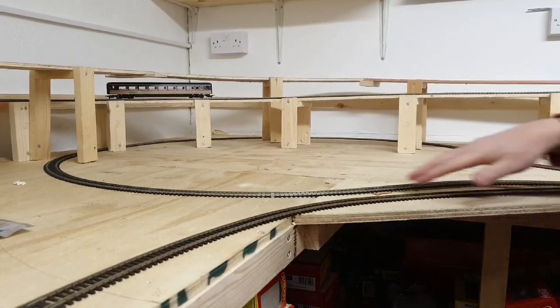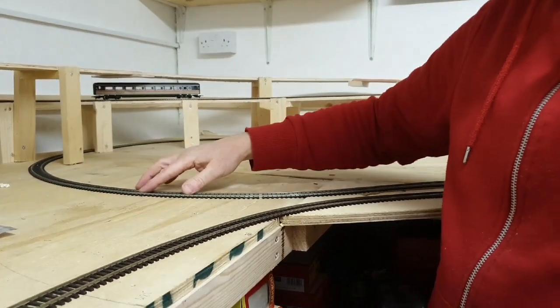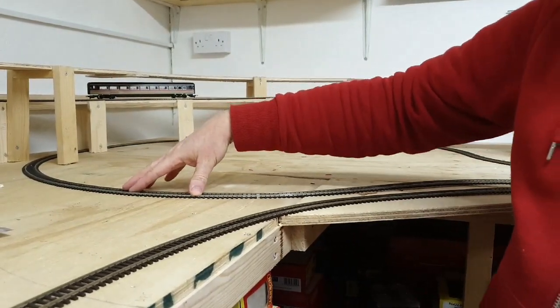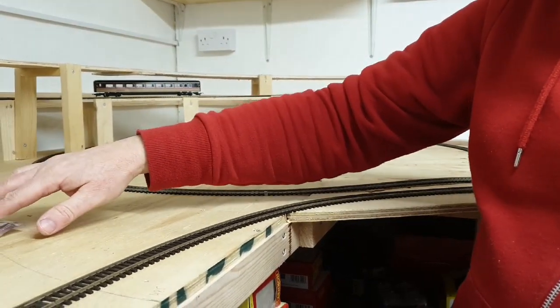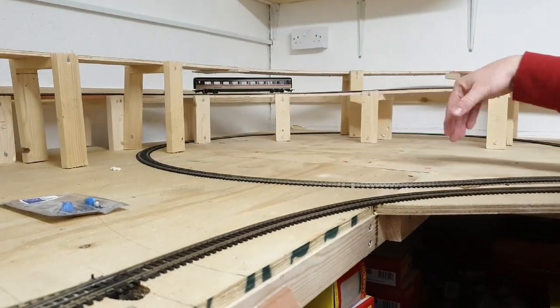So this is my reversing loop here. So what I'm going to do is I'm going to take out this section of track here, replace the fish plates with plastic fish plates, solder two droppers onto here to connect to the auto-reverser, and then the other two lines from the auto-reverser will connect onto the main bus wire underneath.